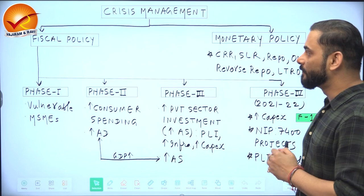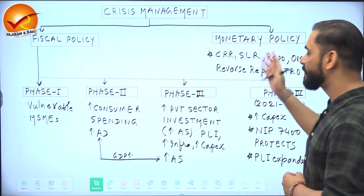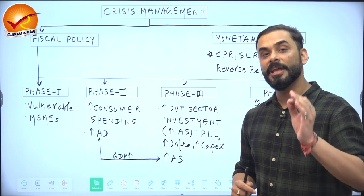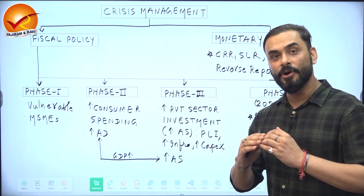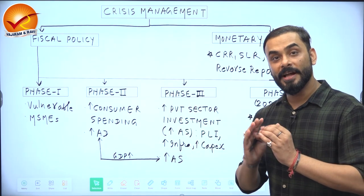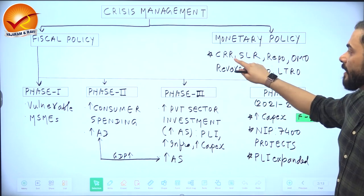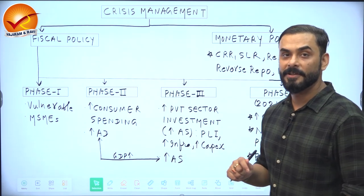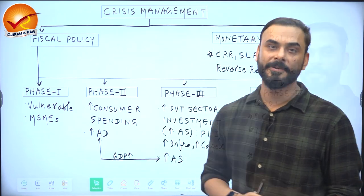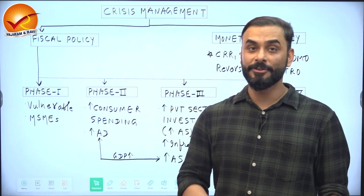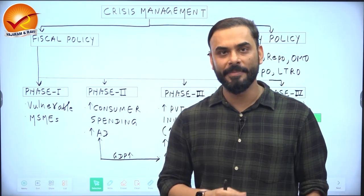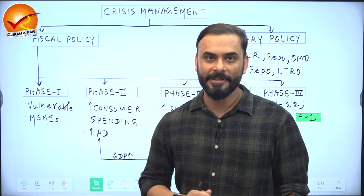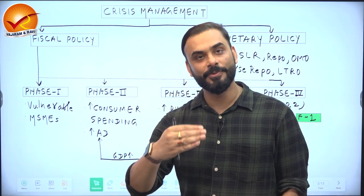Crisis management typically comprises two approaches: fiscal policy and monetary policy. Under monetary policy, the Reserve Bank of India tried to ensure enough liquidity for different sections of society using tools like CRR, SLR, repo rate, open market operations, reverse repo rate, and LTRO. The liquidity management policy of RBI went through two phases — in the first phase RBI tried to increase liquidity, and in the second phase RBI tried to reduce it slightly.